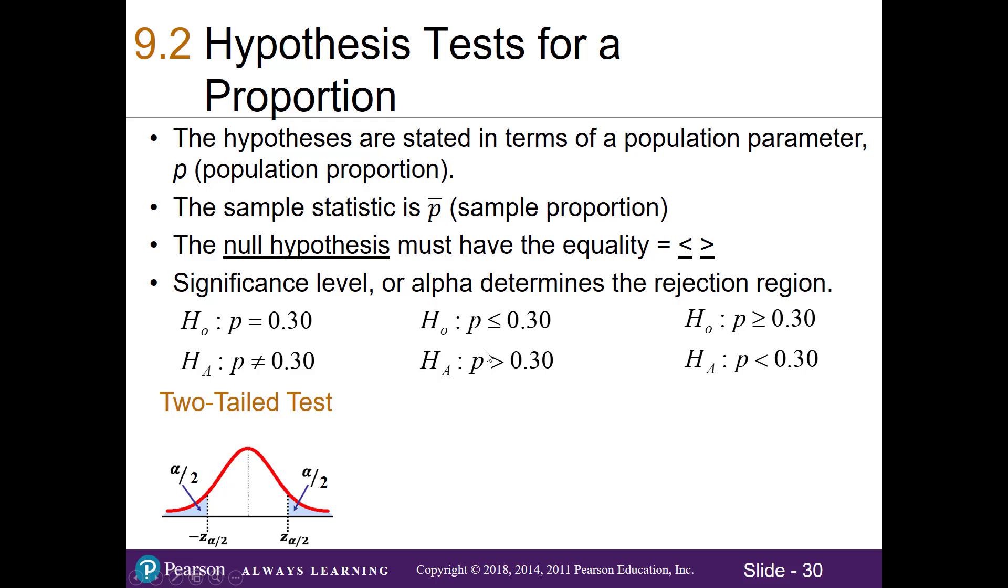In this example here, our null hypothesis states that the population proportion is less than or equal to 0.3, and the alternative states that the population proportion is greater than 0.3. Because of our greater than symbol in the alternative hypothesis, it points to the right, we're going to be working with a one-tailed upper tail test. If that's helpful to remember, just look at the alternative hypothesis. Whatever that symbol states, that's the direction you want to go.